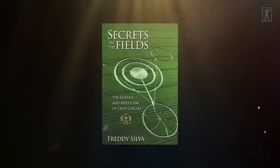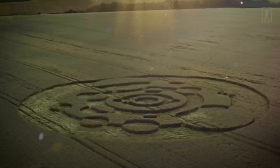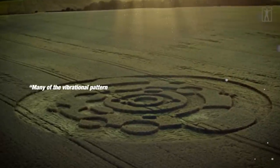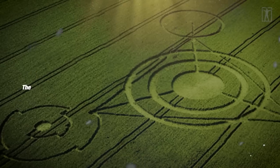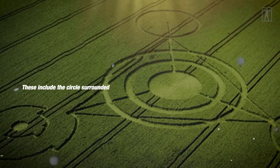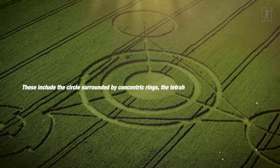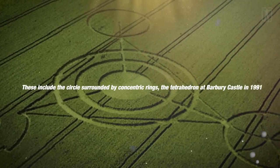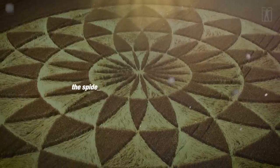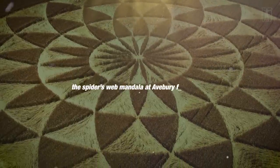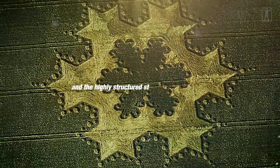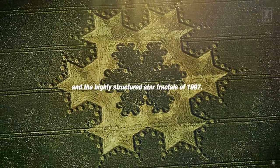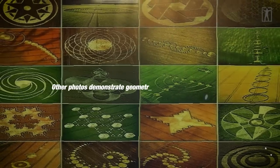In his book Secrets in the Fields, Freddie Silva says many of the vibrational patterns found in Jenny's photos mimic crop circle patterns. These include the circles surrounded by concentric rings, the tetrahedron at Barbary Castle in 1991, the spider's web mandala at Avebury from 1994, and the highly structured star fractals of 1997. Other photos demonstrate geometry within the crop circle's pattern.